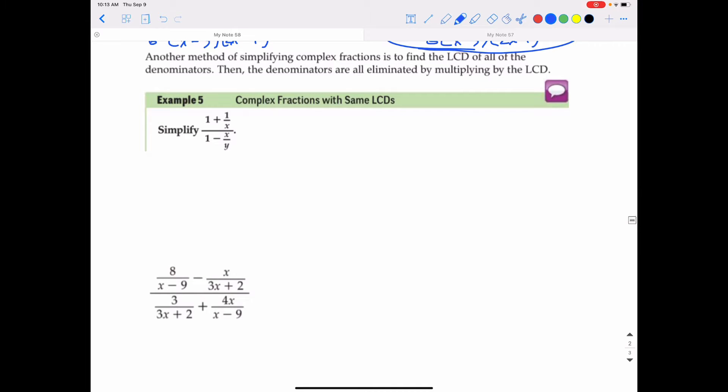We can also add or subtract complex fractions, and a method for doing that is to find the least common denominator of the denominators. Then, the denominators are all eliminated by multiplying by the LCD.